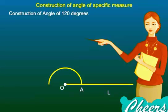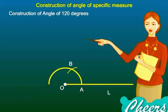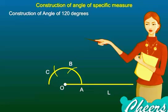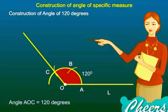Step 4: With O as center and the same radius, draw an arc that cuts the semicircle. Let it cut at B. Step 5: With B as center and the same radius again, cut the semicircle at point C. Step 6: Join OC. Angle AOC is the required angle.